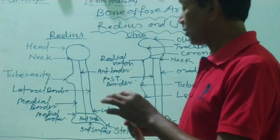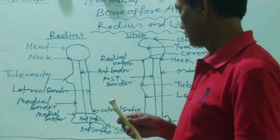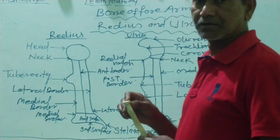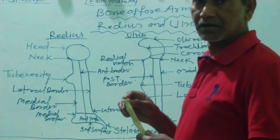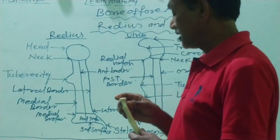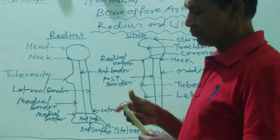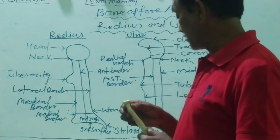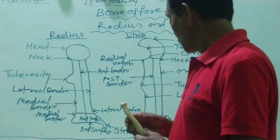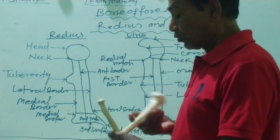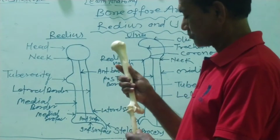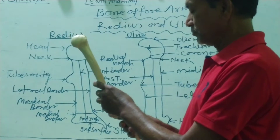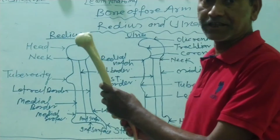The upper end is rounded in shape. The head of the radius is formed by hyaline cartilage and articulates with the lower end of the humerus, forming the humeral-radial joint.